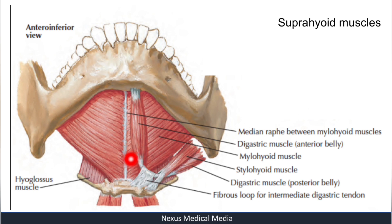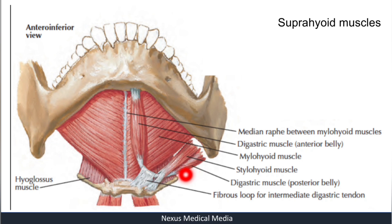Here again are the suprahyoid muscles. You can see the median raphe between the two mylohyoid muscles. Here you can see the digastric muscle anterior belly, and if you follow it you will see the posterior belly of the digastric muscle. From the styloid process you can see the stylohyoid muscle, and here is the mylohyoid muscle.